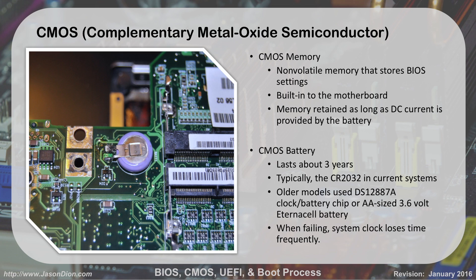When we took apart the computer, you were able to see that battery and where you'd replace it. On this picture you can see the battery being held by a clip. The CMOS battery generally lasts about three years. Typically they're a CR2032 battery used in current systems. Some older systems use a DS12-887-alpha, which basically looked like a big square block on the motherboard. And some older ones even used AA-sized batteries called external cells. If the battery starts failing, you're going to see the system clock keep losing time — if you turn on your computer today and tomorrow it shows the wrong time, you know you have a problem.